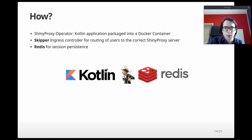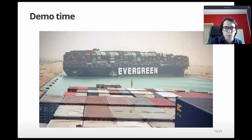How does it work? We have three components. First, the ShinyProxy operator — a Kotlin application packaged into a Docker container. Second, Skipper, an ingress controller for Kubernetes that handles routing of users to the correct ShinyProxy server. Third, Redis, for session persistence so the user stays logged in when transferred to a new server.